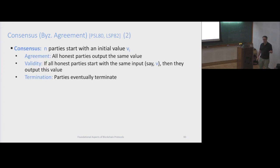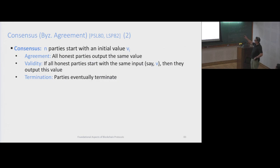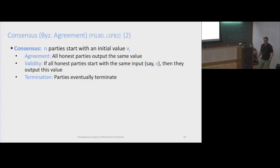These are the basic properties, formulated by Lamport et al. in the early 80s. Every party starts with an initial value. The agreement condition or consistency condition means everybody outputs the same value. Validity means if they all started with the same value, that has to be the value agreed on - also called a non-triviality condition. And termination means parties would eventually terminate.